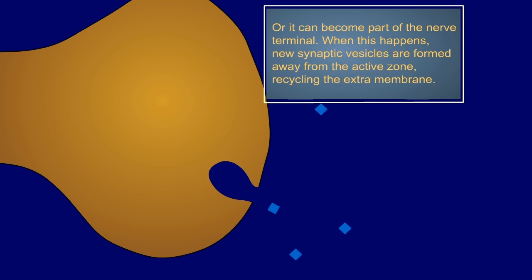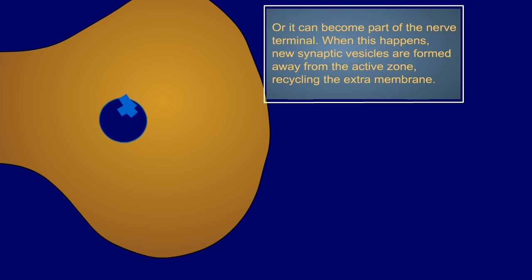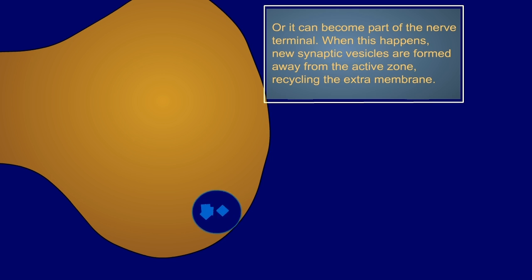Or, it can become part of the nerve terminal. When this happens, new synaptic vesicles are formed away from the active zones, recycling the extra membrane.